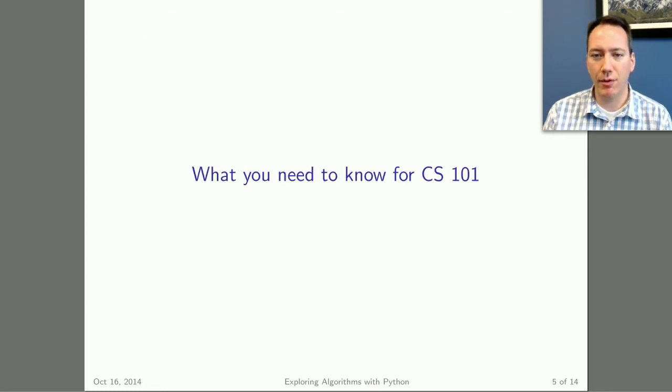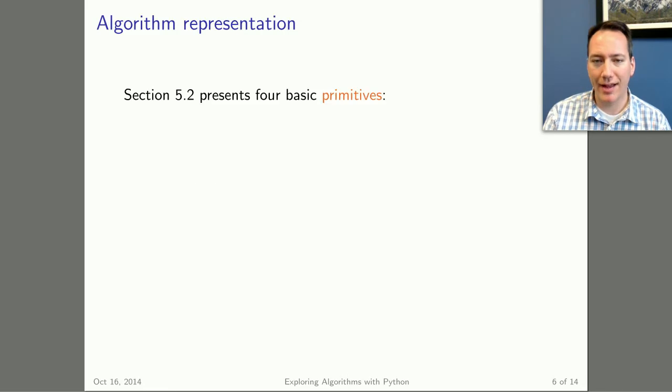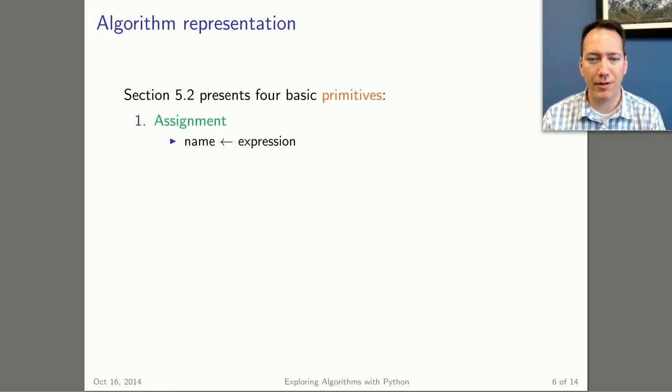So let me tell you in this video what you need to know in terms of the Python language in this course. We've been talking about syntax and semantics this week and what that means with respect to primitives. Now if you go back and look at section 5.2 of the book, there's really only four syntactical primitives that you need to know probably for the whole course. One of them is assignment.